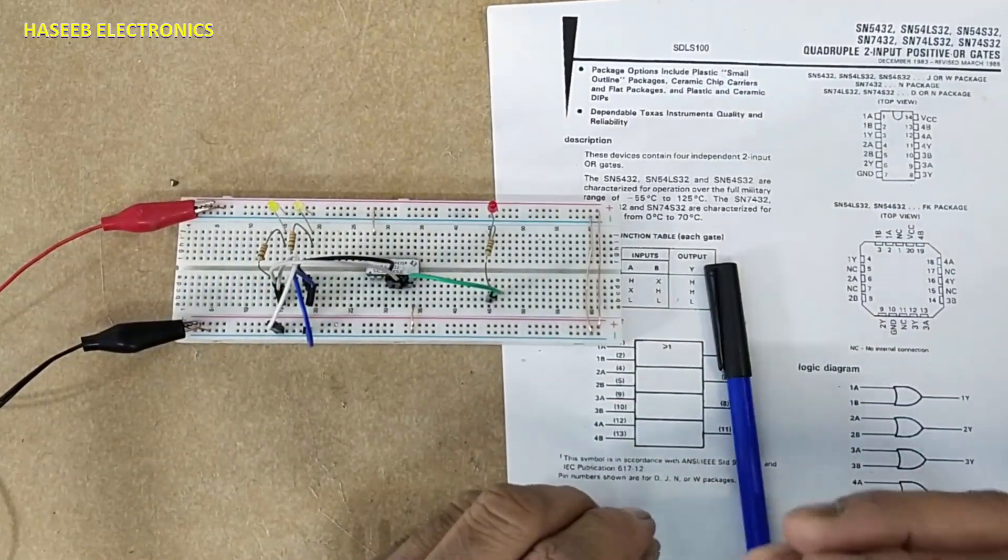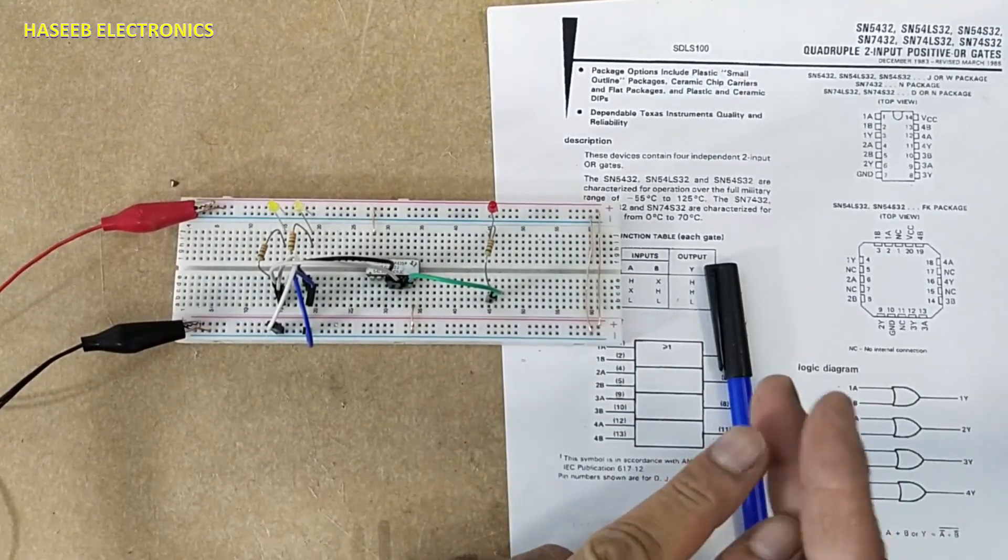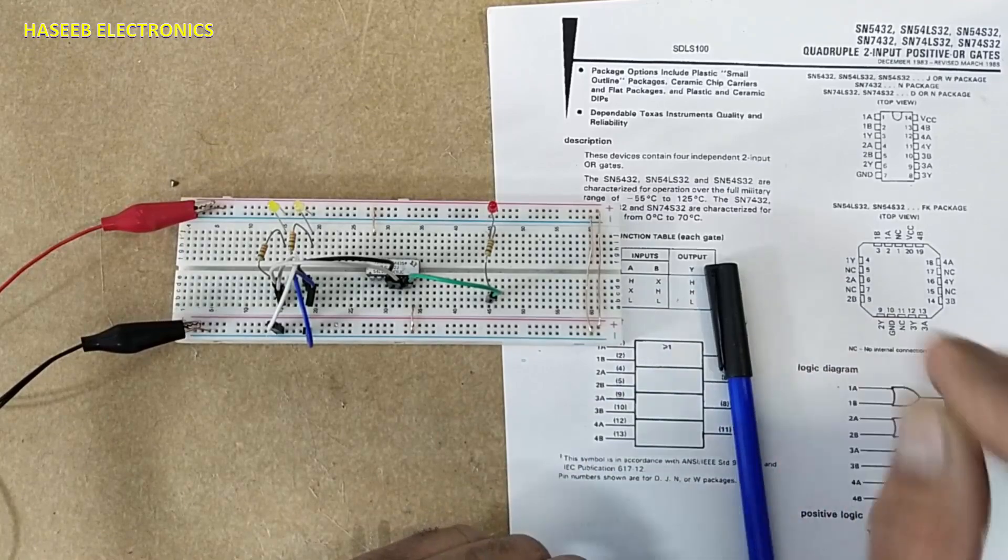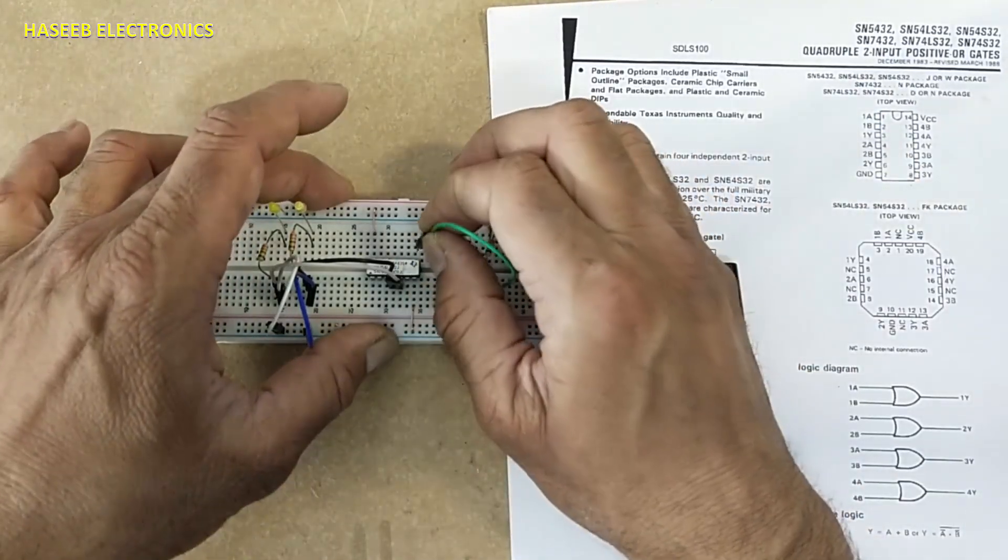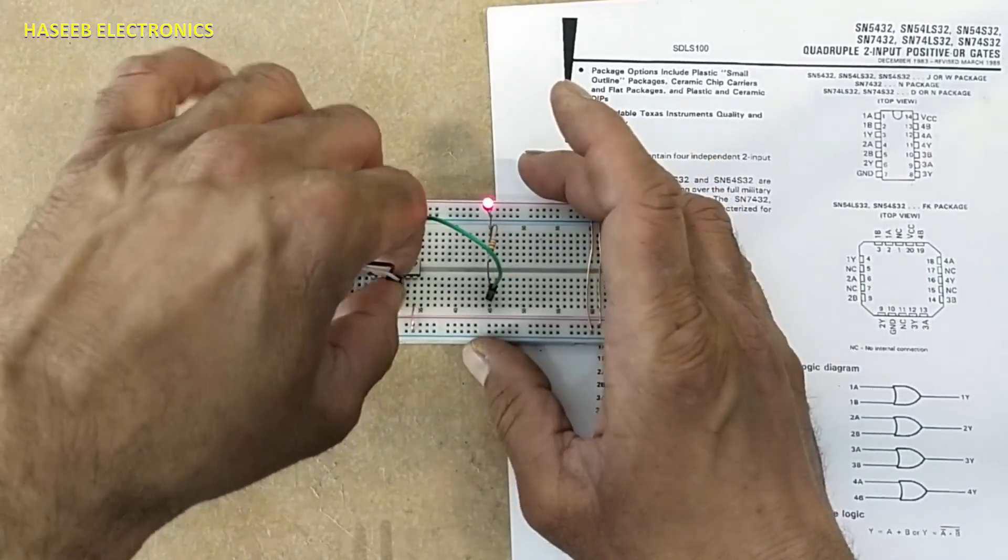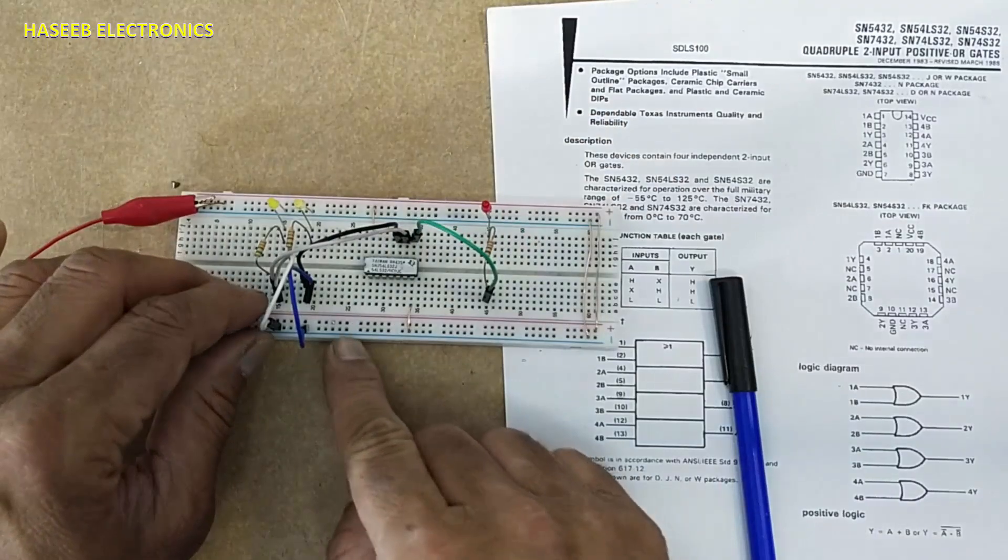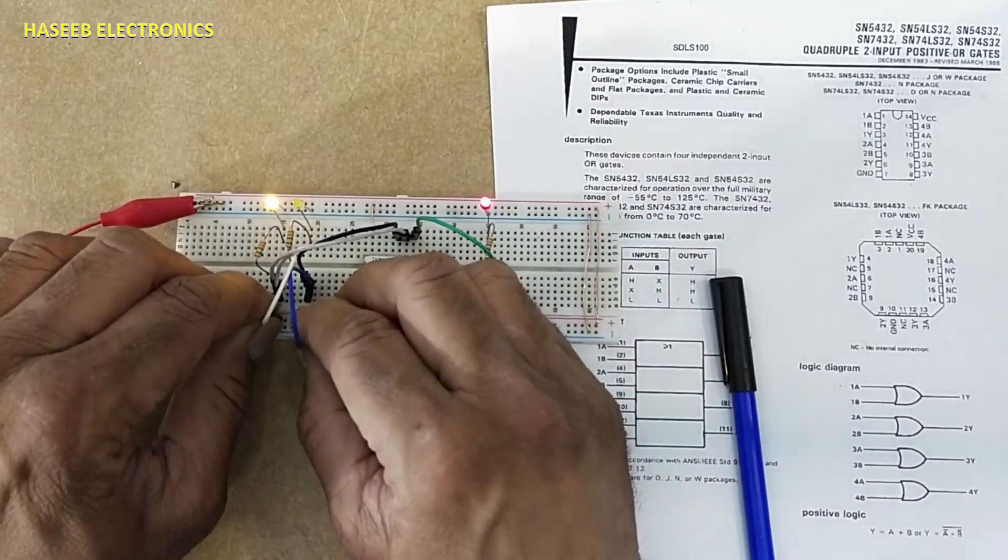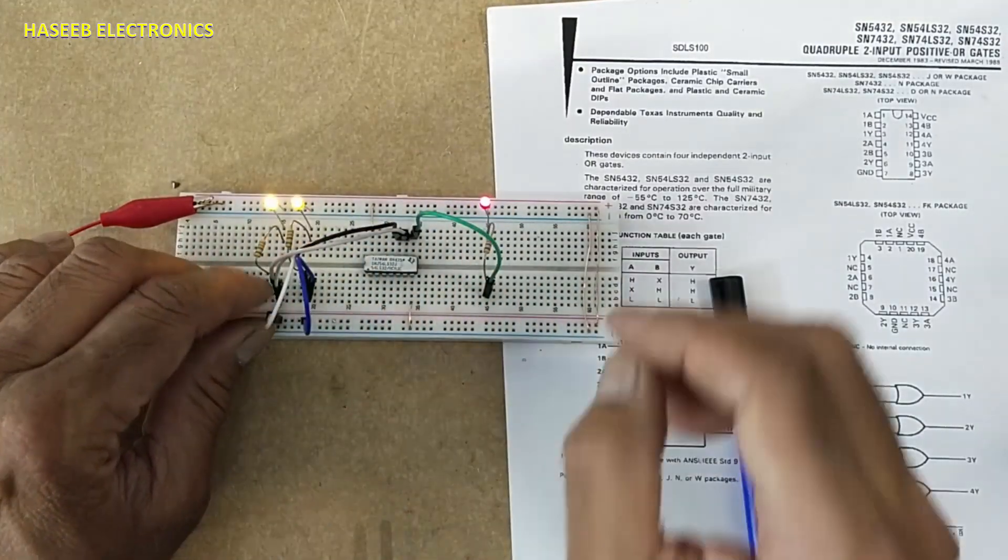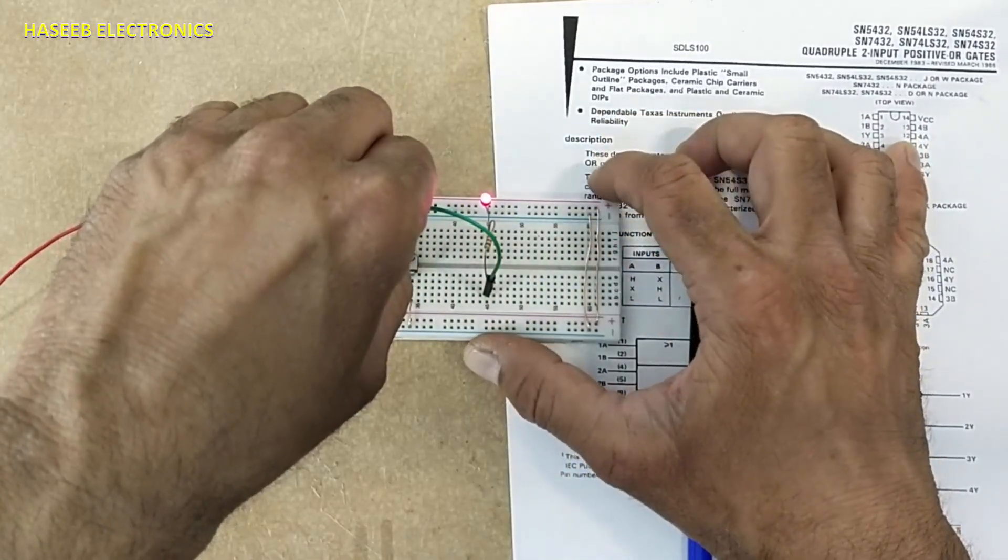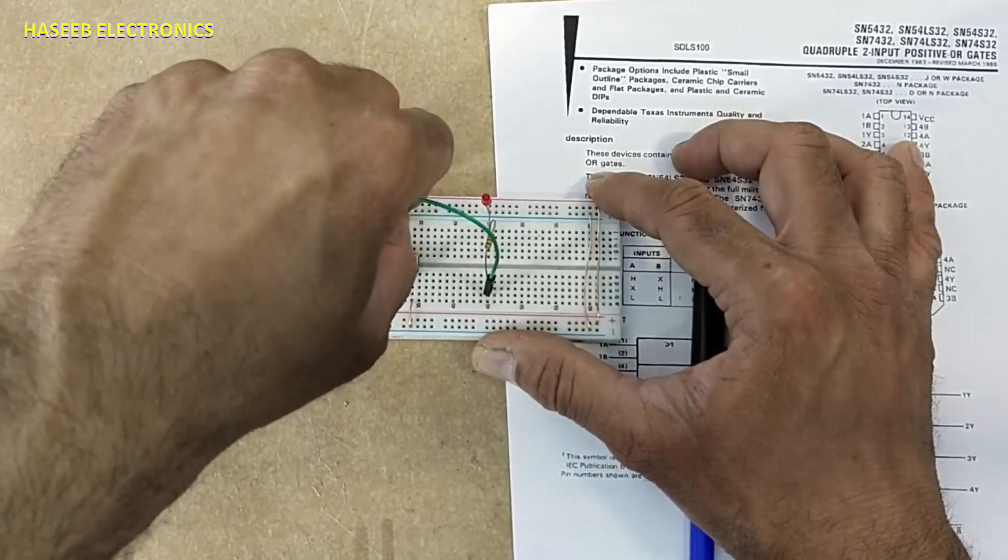This is function of OR gate: this OR, any one input or all inputs are high, output is high. Same way, pin number eight output, nine ten input. All inputs low, output low. Anyone high, output high. All input high, output high. 13 and 12 input, 11 output.